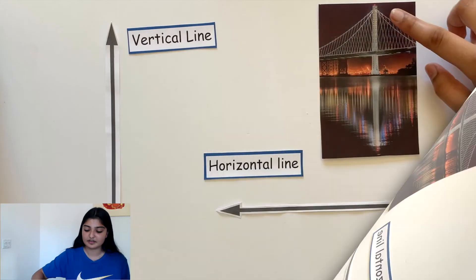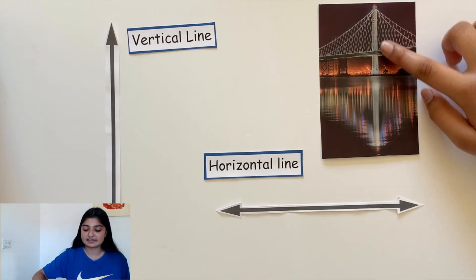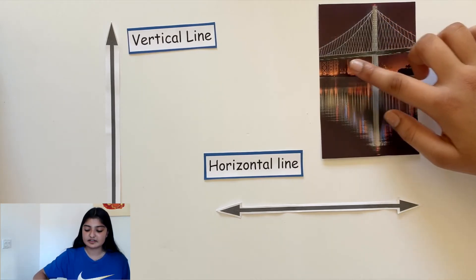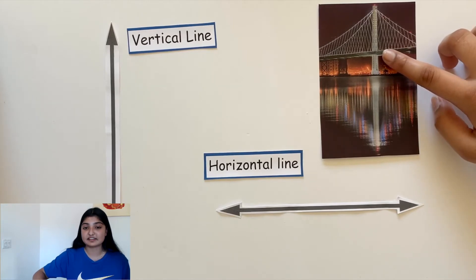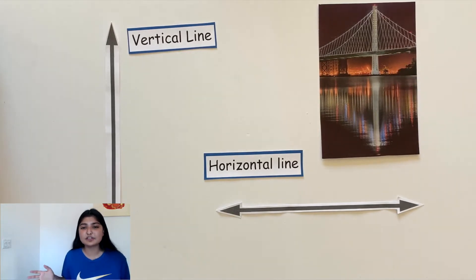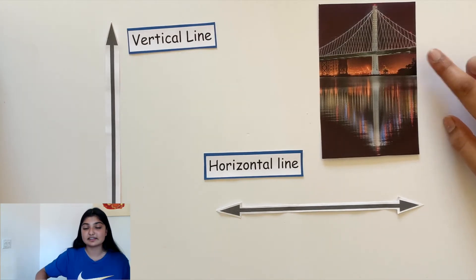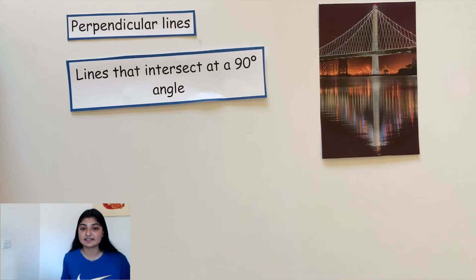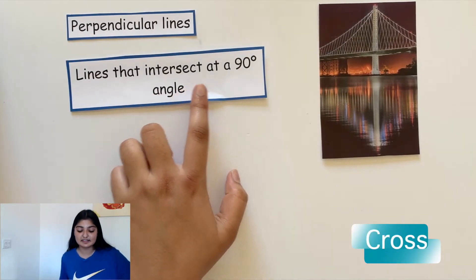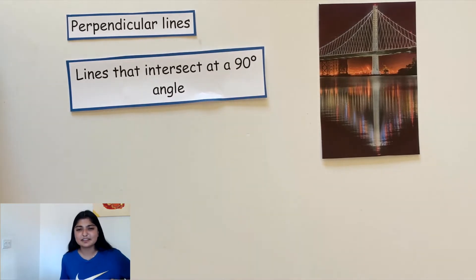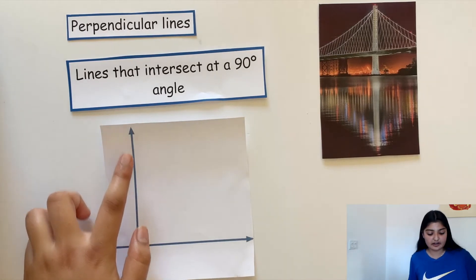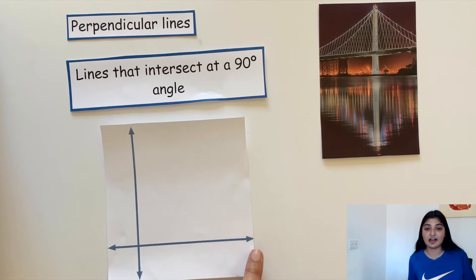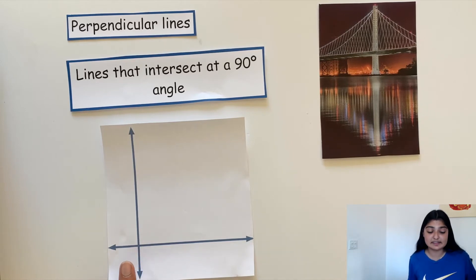Let's turn back to the bridge. We know that this central column is a vertical line, and it meets this road, which is a horizontal line, at this point. What do we call these lines? We call these lines perpendicular lines. Perpendicular lines are lines that intersect at a 90 degree angle. Let's draw them. I've drawn a vertical line and a horizontal line, and they both meet at this point. We can call these perpendicular lines since this angle is 90 degrees.